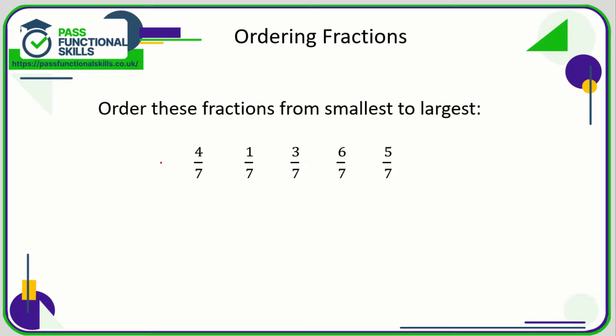Let's take a look at ordering fractions. Ordering fractions is quite easy when the number on the bottom is always the same - it's just a question of comparing the top numbers. The top numbers are 4, 1, 3, 6, and 5. What's the smallest number? It's 1, so 1/7 is the smallest of these fractions.